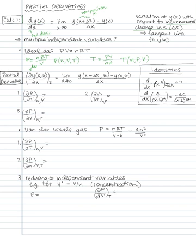Or we could say that T is PV over nR, and T, the dependent variable, is a function of the three independent variables n, P, and V. Now we can define a partial derivative, and we'll use del to signify the partial derivative instead of the full derivative. This is a lowercase delta in Greek letters.